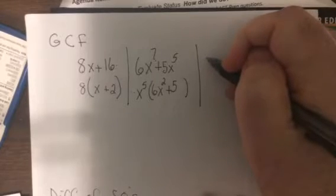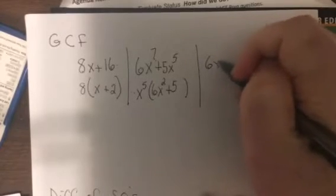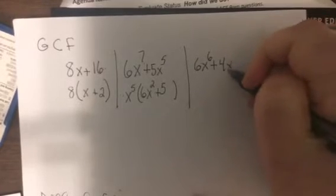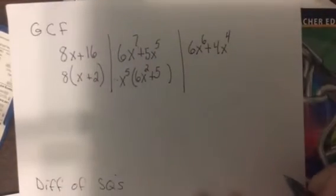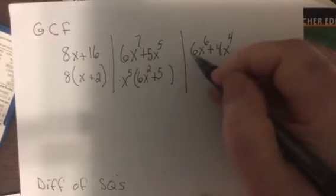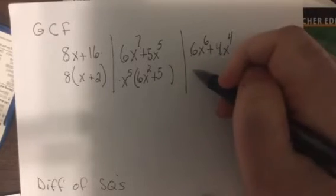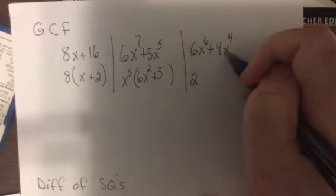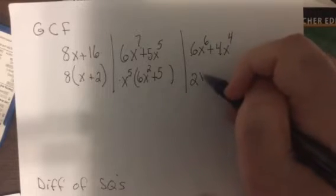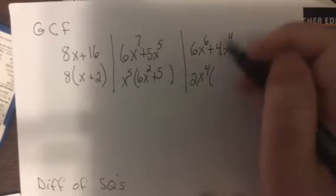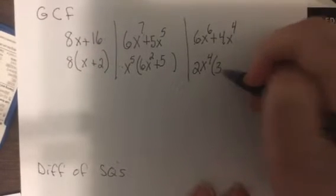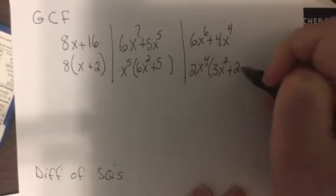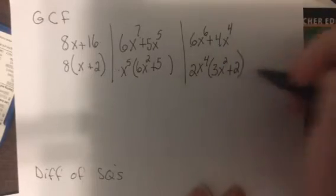So if I have, let's say, 6x to the 6th plus 4x to the 4th, you'd say okay, what number goes into 6 and what number goes into 4? And hopefully you see it's 2. Do I have an x in both terms? Yep. Lowest power is 4. So it'd be 3x squared plus 2, because 2 times 2 is 4 and we already have x to the 4th.